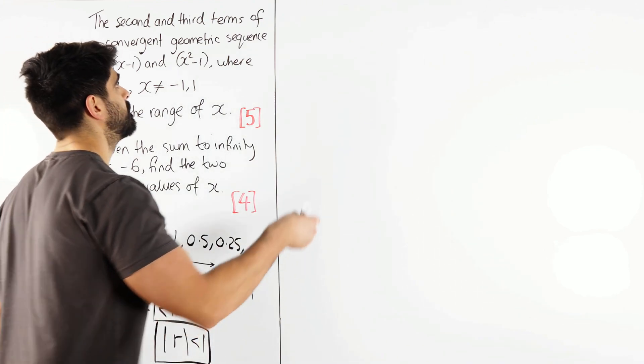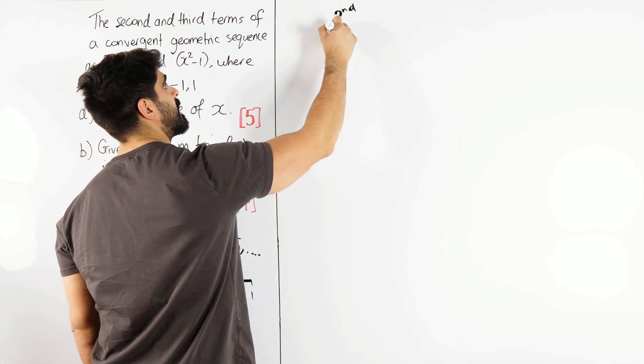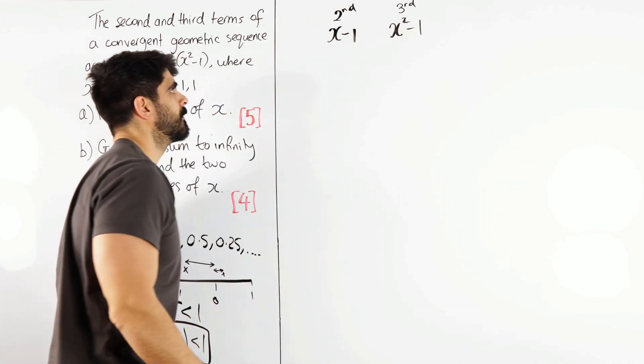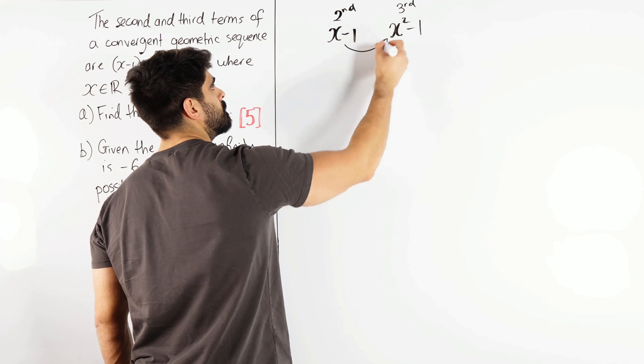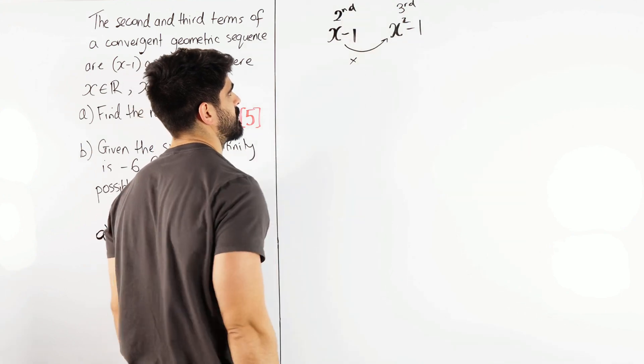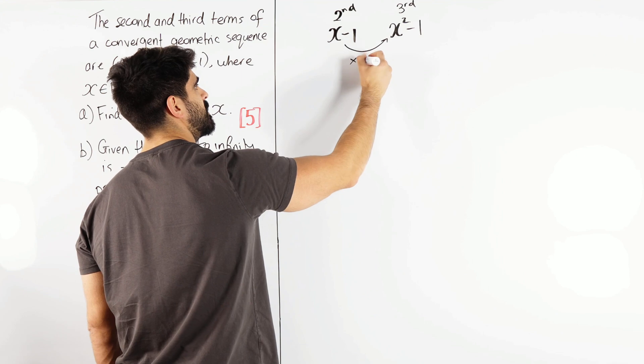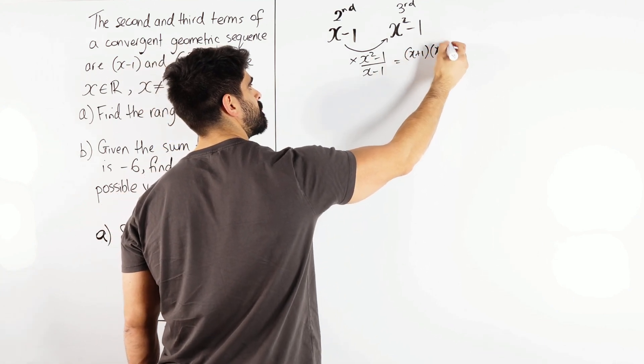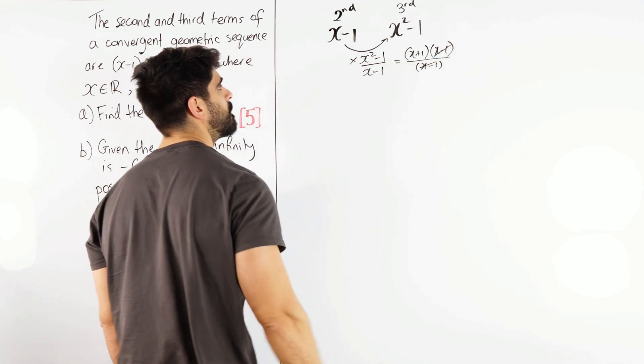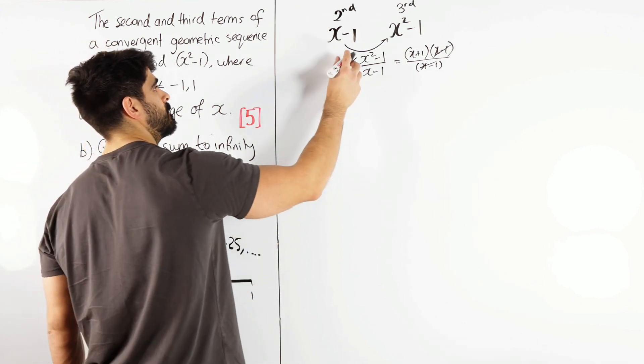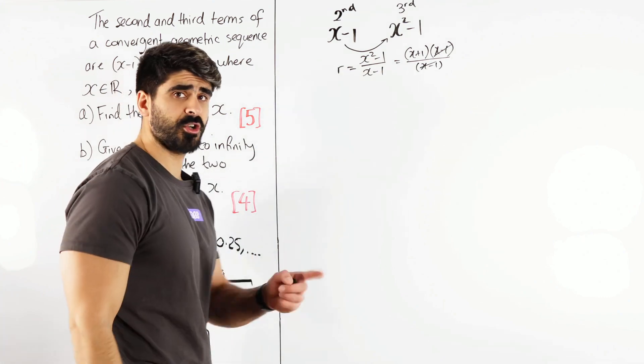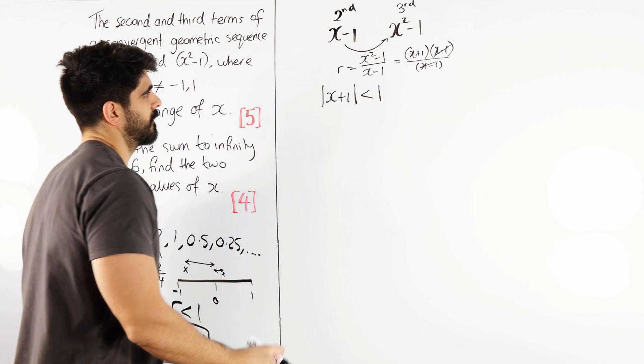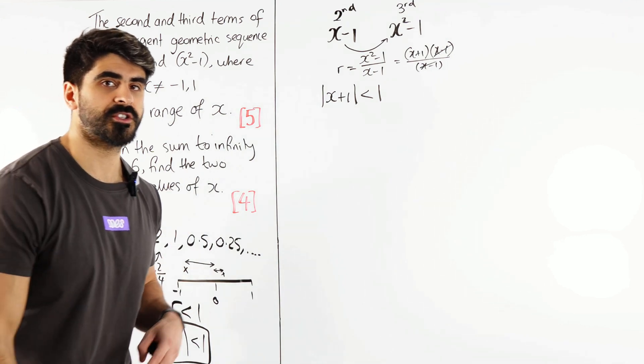Now here they're saying the second term, so our second term is x minus 1 and our third term is x squared minus 1. How do we work out R from there? Well R is the third term divided by the second. I was just going to say second divided by first - I thought I'll just use these bits. Which can be simplified because here we can use difference of two squares.